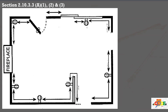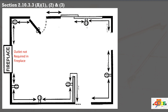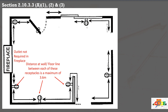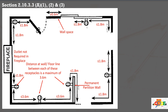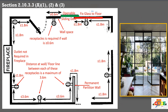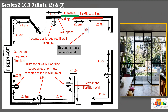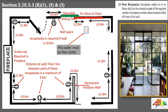Let's look at another floor plan where receptacle outlets are already in place. The fireplace is not considered a wall space. For the long wall, ensure the distance from each outlet is not more than 3,600 mm, then check spacing to see if it complies with paragraph A1. If this wall space is 600 mm or more, an outlet is required. If a fixed panel is full glass and an outlet cannot be installed, use a floor outlet to comply with paragraph A2. In paragraph A3, floor outlets must be within 450 mm from the wall.